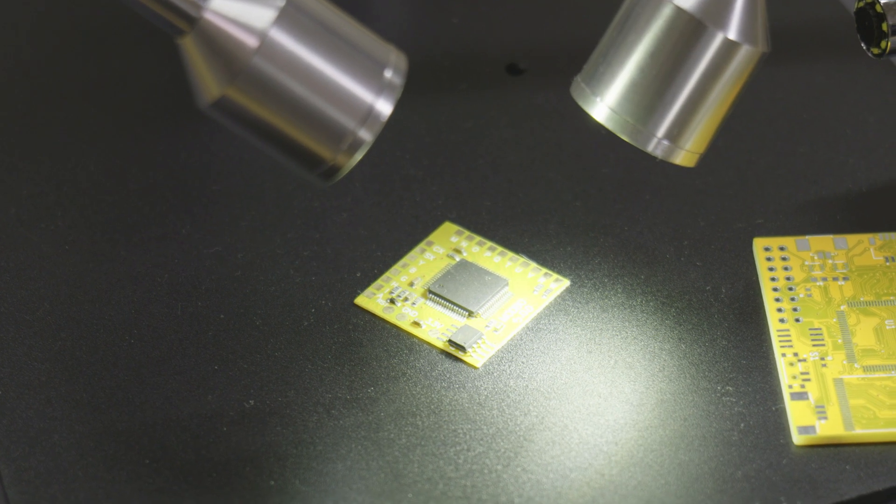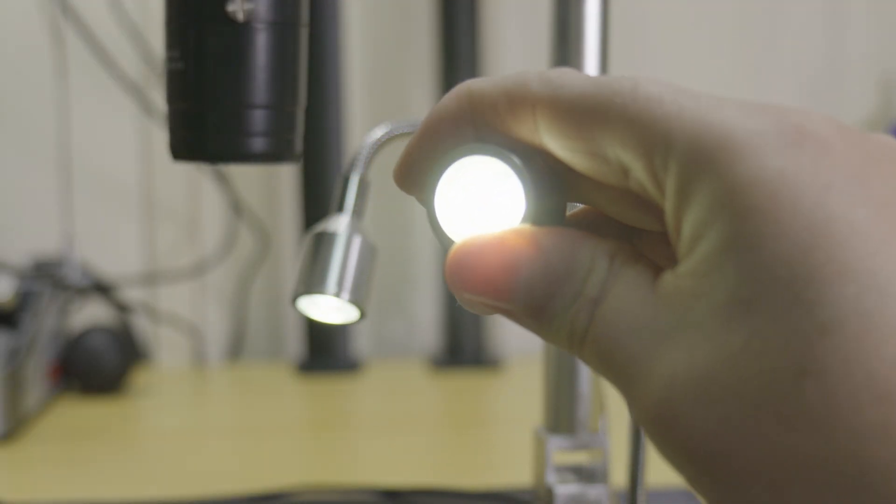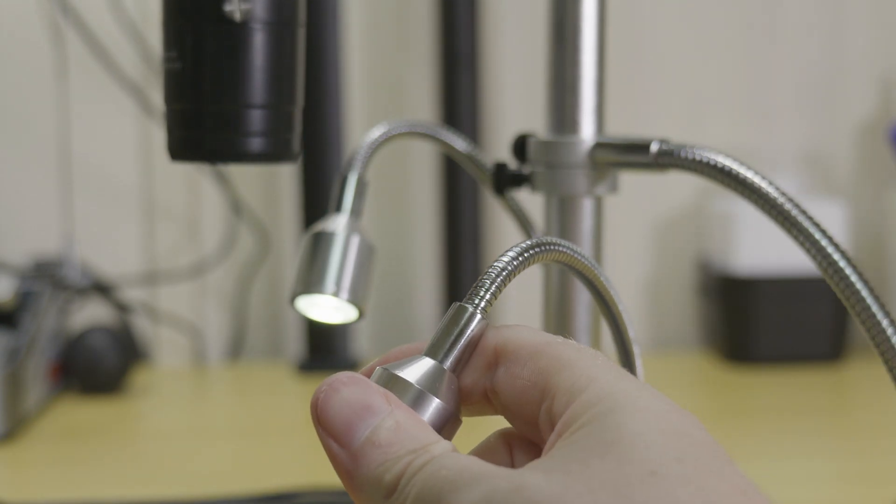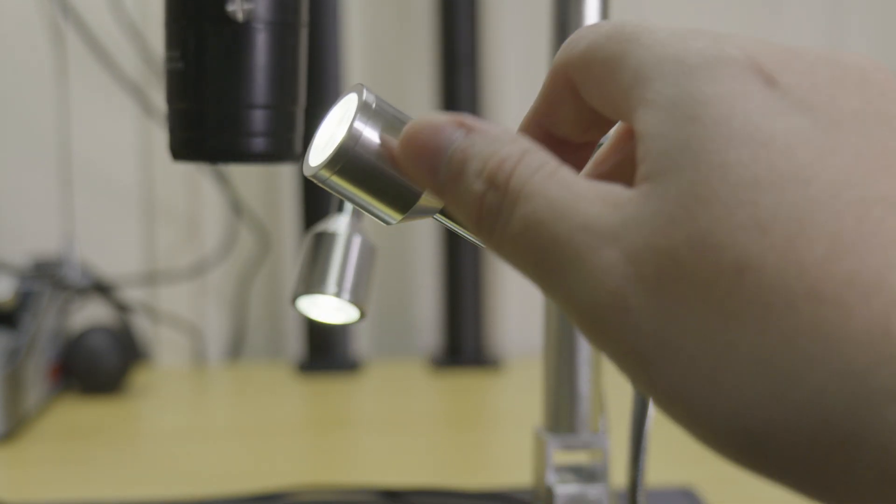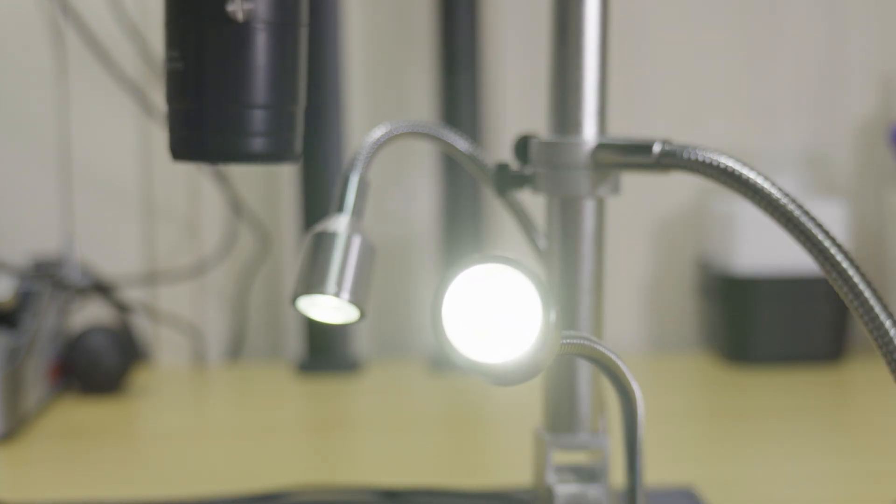The lights fitted are decent. In some cases they're advantageous over standard ring lights found on most stereo zoom microscopes as you can quickly adjust the angle for a better look. However in other cases they can cause hot spots and be a little bit annoying to use. It's sort of 50-50 on this one I'm not too sure.